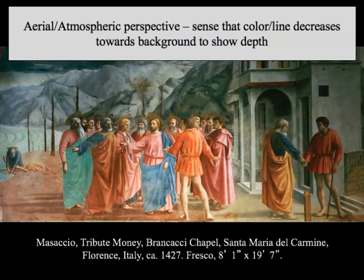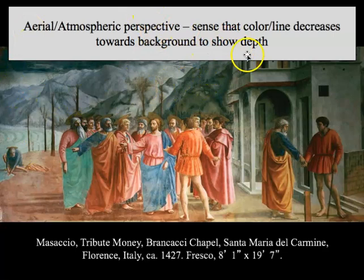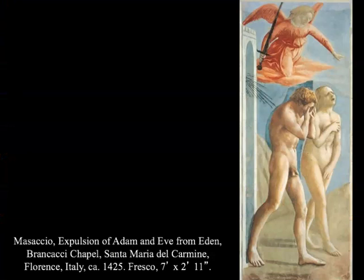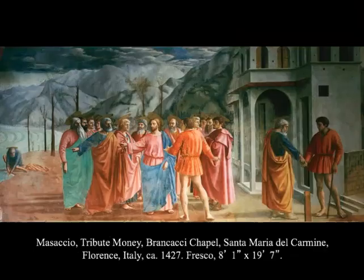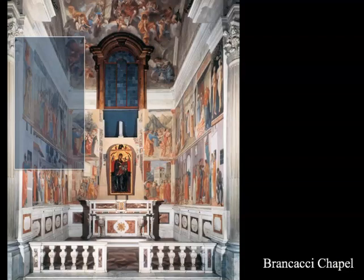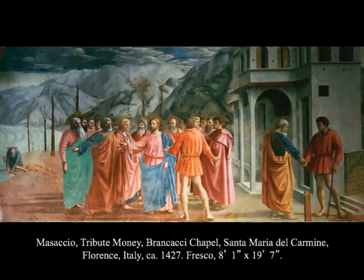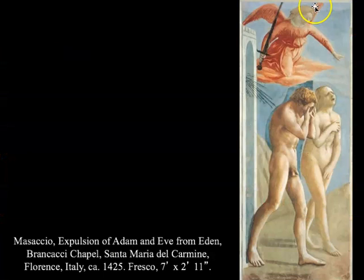He also uses aerial and atmospheric perspective, which means that the sense of color and line decreases towards the background to show depth — the colors up front are brighter, and then with the darkness of the landscape he gives you a sense of depth. We're also going to talk about another part of the Brancacci Chapel: the Expulsion of Adam and Eve from the Garden of Eden.